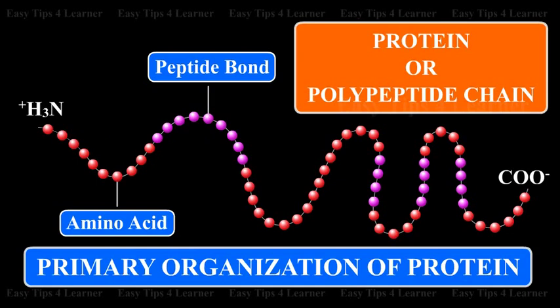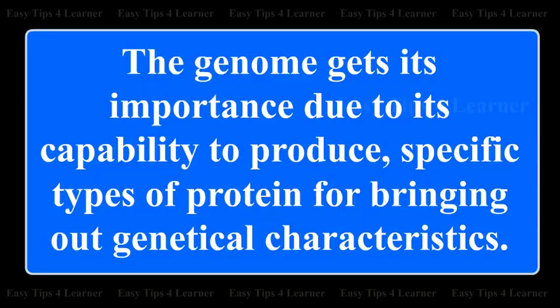The amino acid sequence and level of organization is determined genetically. Hence, the genome gets its importance due to its capability to produce specific types of protein for bringing out genetic characteristics.